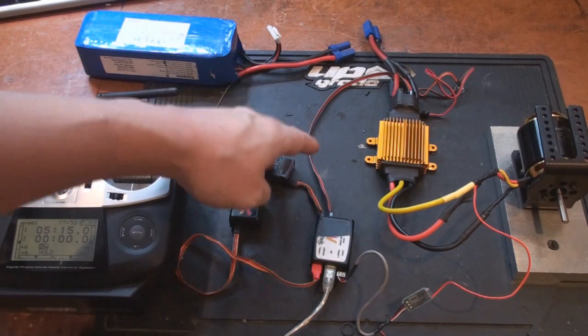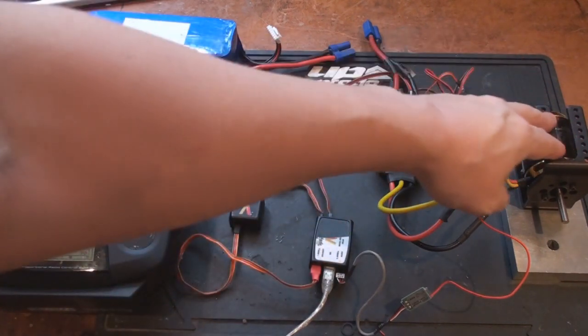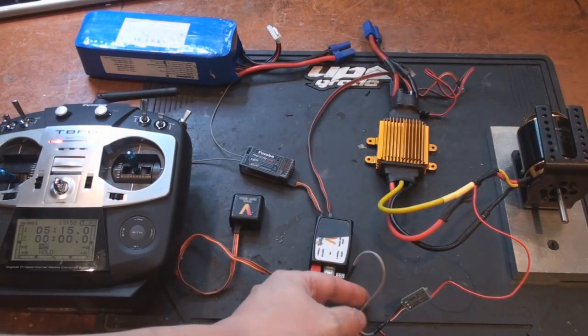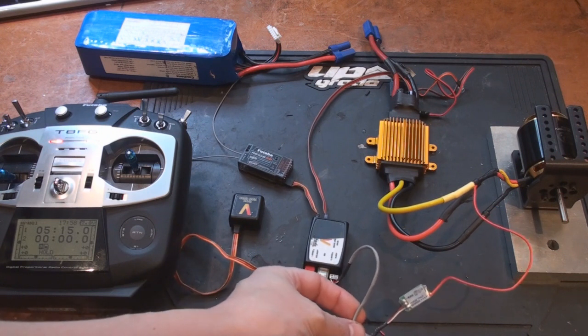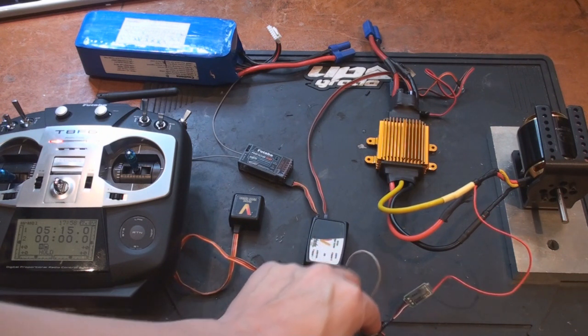So the speed controller, receiver, my V-Bar, a motor and also the phase sensor that reads the RPM from the motor back to the V-Bar.